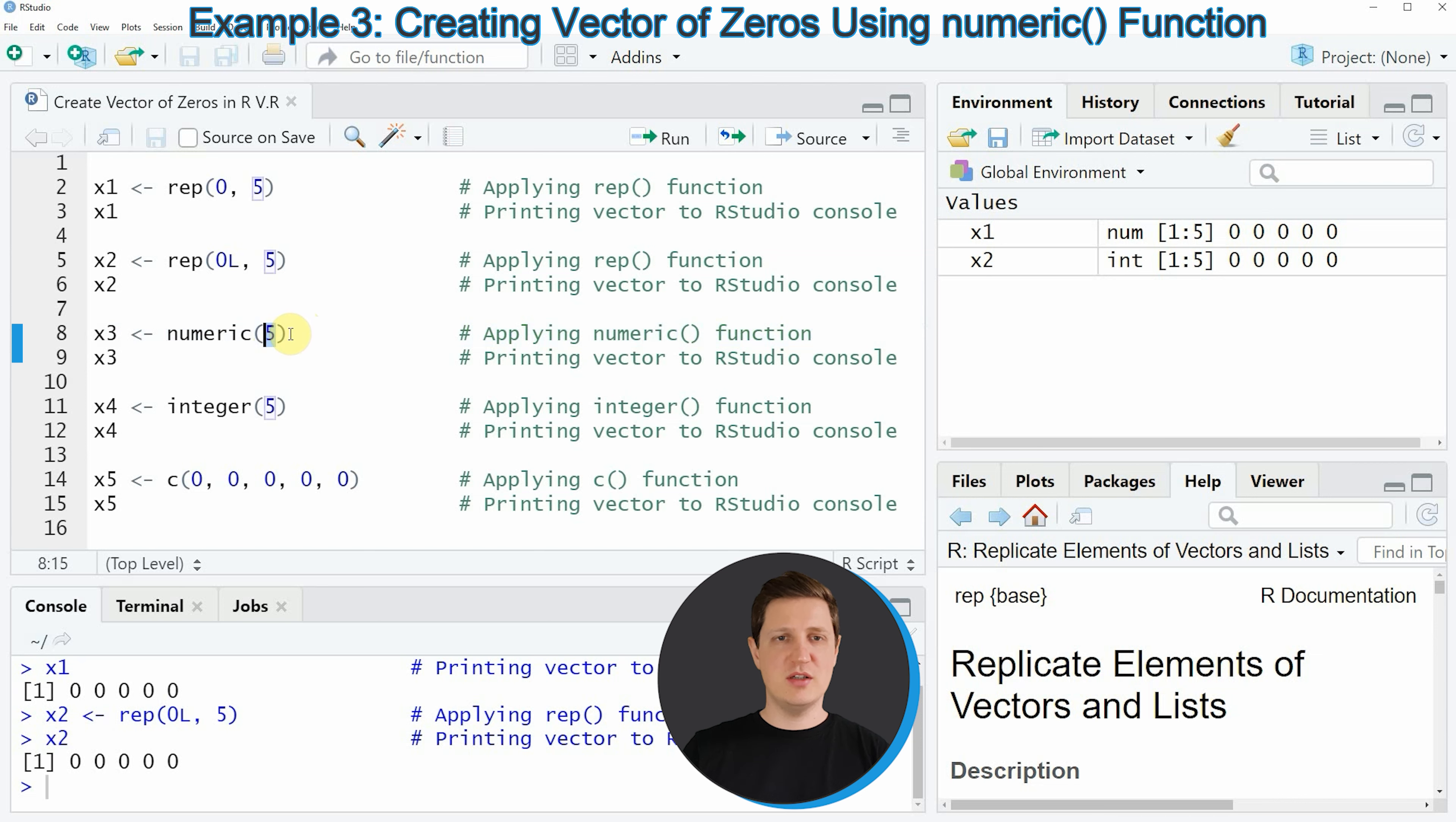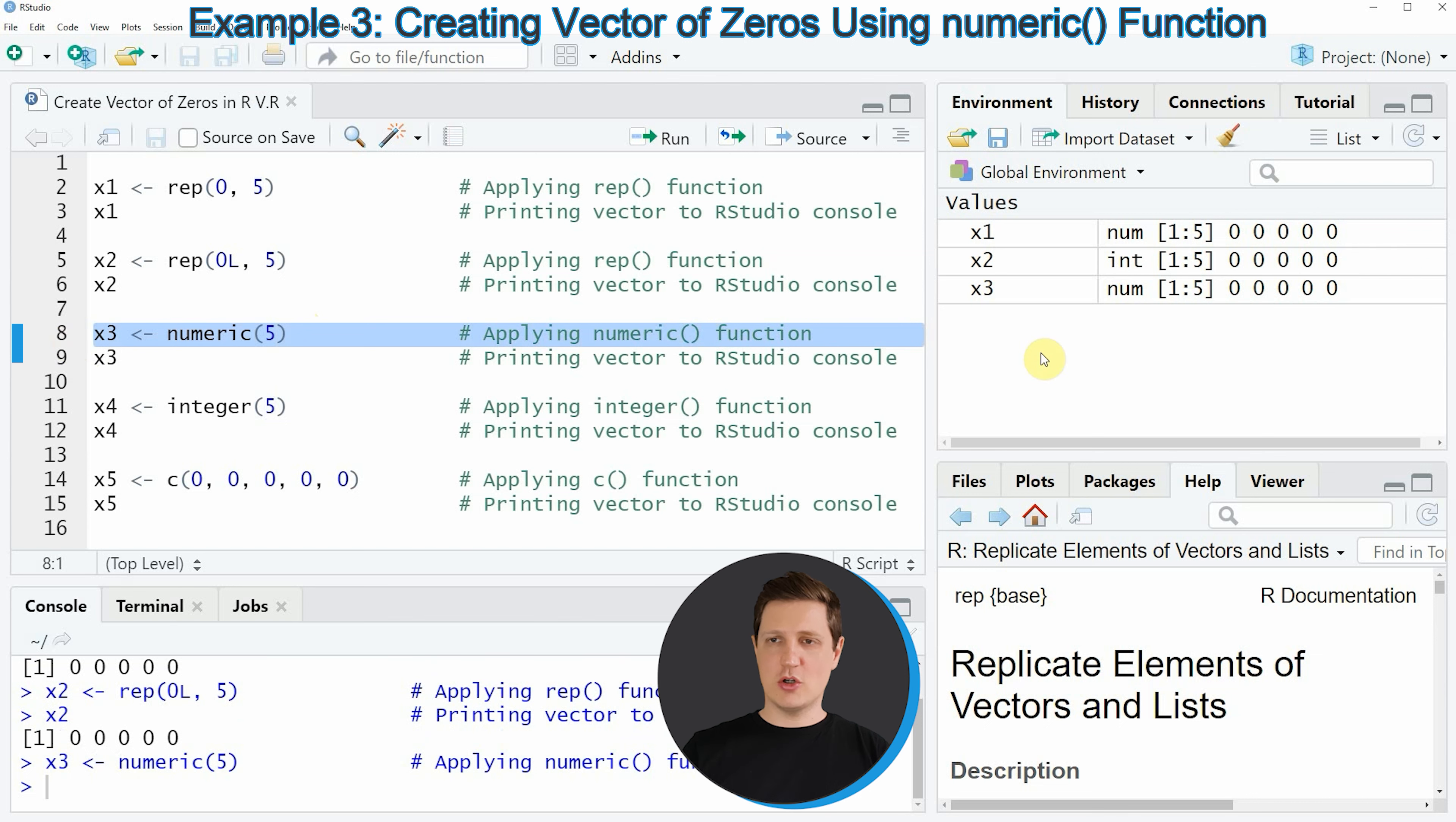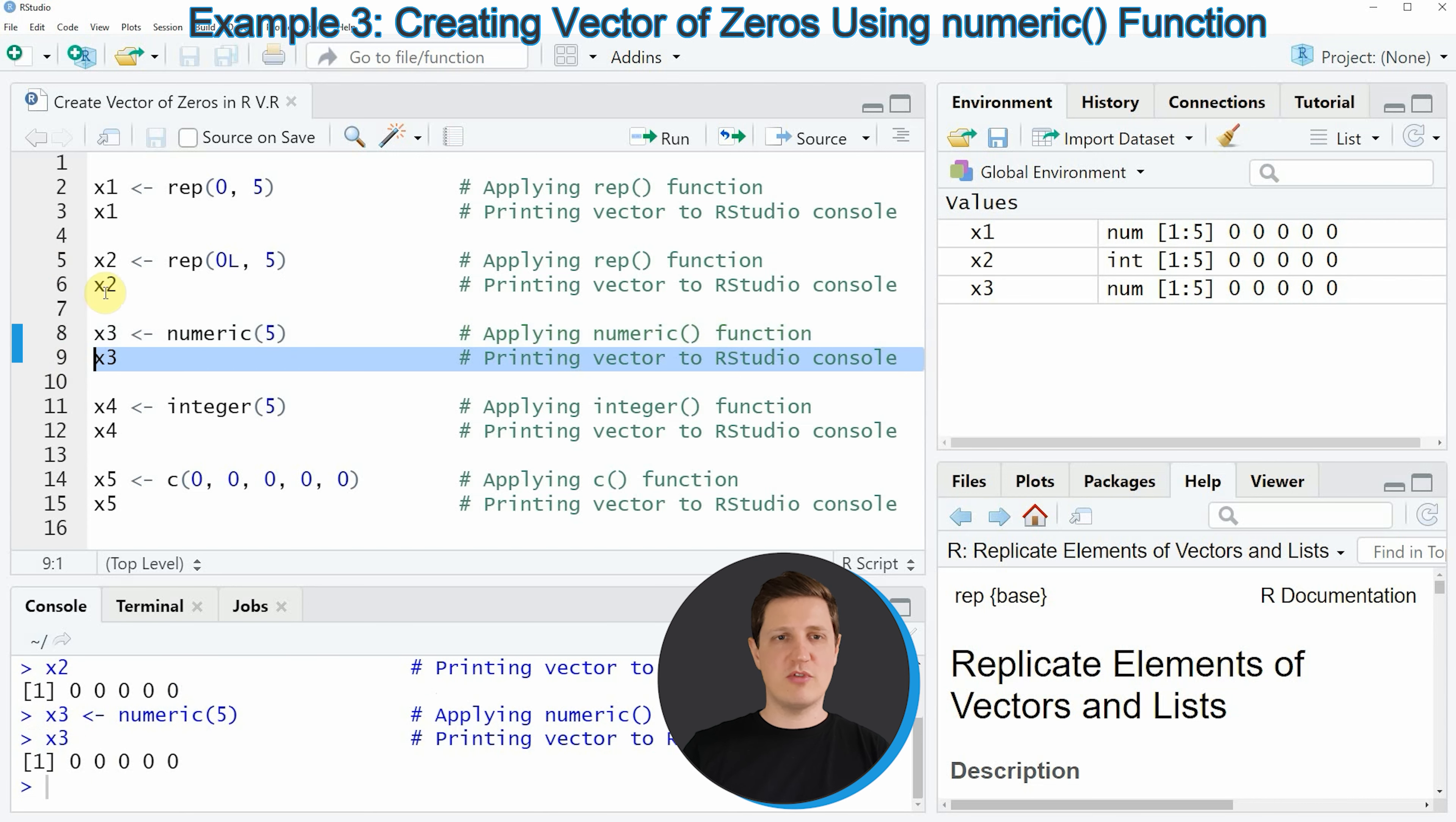If you run line 8 of the code another vector object is created and this vector object is also consisting of five zeros.